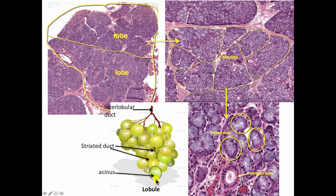I like to think of a lobule as a bunch of grapes — shown here — each acinus being a grape, and there's a little thin stalk coming out of each grape which would be an intercalated duct. These intercalated ducts then form striated ducts. Striated ducts join together to form an intralobular duct, and these intralobular ducts then join together to form a large interlobular duct, such as is shown here. These interlobular ducts then join together to eventually deposit the secretion onto the surface of the gland.